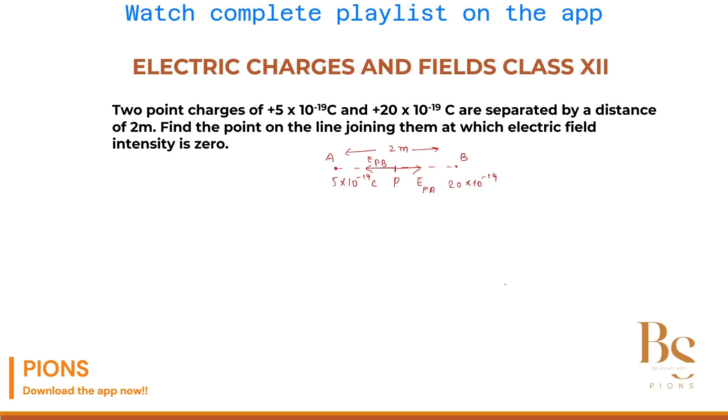Now let's write the magnitudes. Both are pointing in opposite direction. So theta is 180 and if theta is 180, we know that electric field will be subtracted. So net electric field at point P will be equals to EPA minus EPB.